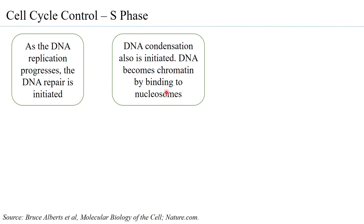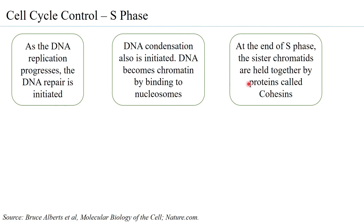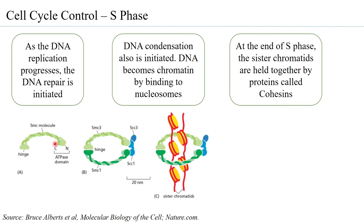At the end of S phase, the sister chromatids — the newly formed homologous copies — are held together by proteins called cohesins. Cohesins are made up of proteins called SMC (structure maintenance of chromosome) molecules, which form a complex that can bind to two sister chromatids. The entire stretch of sister chromatids is held together by several cohesins, so from S phase onwards the two sister chromatids always remain together.